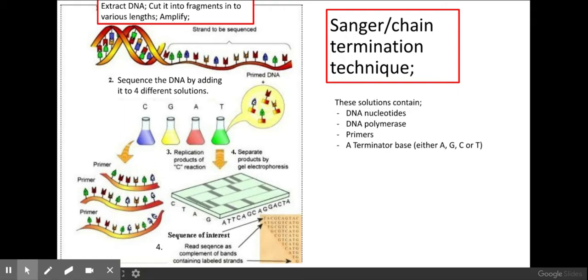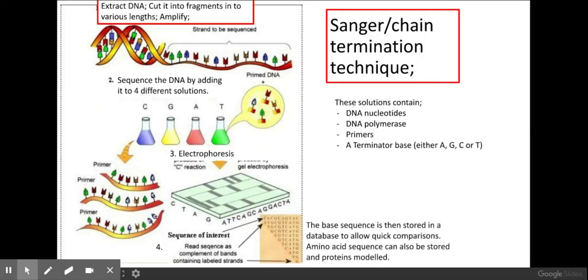Once I've got these different strands and different lengths of DNA based upon these terminator bases that have kicked off my DNA polymerase, I will then add them onto an electrophoresis plate which separates out my DNA based upon mass. Then you can read the sequence of DNA which can then be stored to allow quick comparisons.